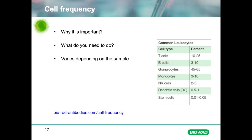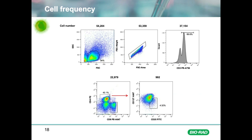An example of a gating strategy: 100,000 cells were stained with CD3, CD4, CD8, CD127, and CD25. After gating on the forward and side scatter, we were left with just over half the starting number. We removed the doublets and gated on T cells, leaving just over 37,000 cells. Identifying the CD4-positive population left 23,000 cells. But the final T regulatory population — CD127-low and CD25-positive — leaves us with just 992 cells, less than 1% of the starting sample. So if we had any more gates, we would have very few cells indeed.